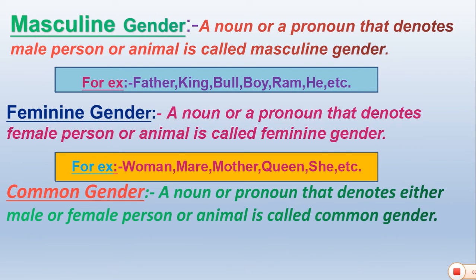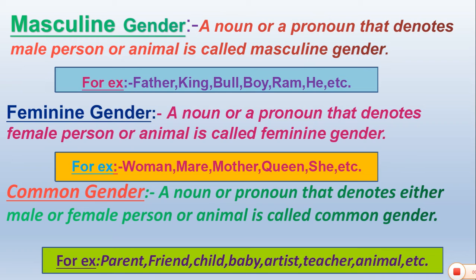Next, let's talk about common gender. A noun or pronoun that denotes either a male or female person or animal is called common gender. We don't know if it is male or female. For example: parent, friend, child, baby, artist, teacher, animal, etc.